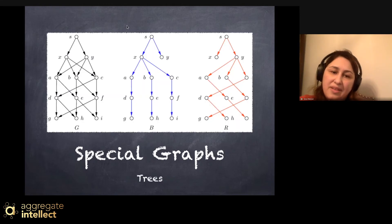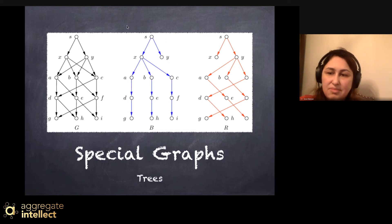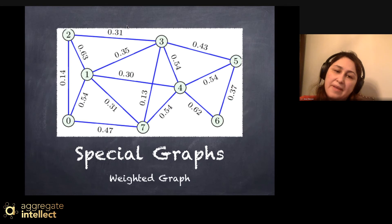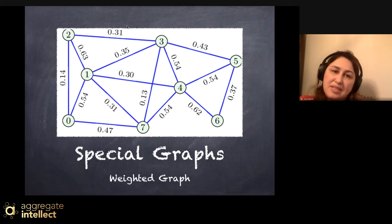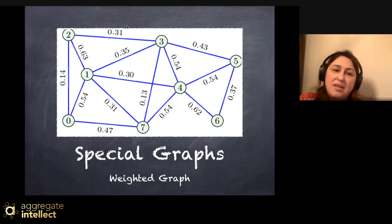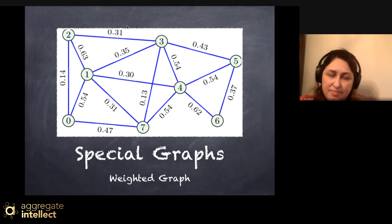Another famous category is trees — one of the most well-known special graph types. Also important are weighted graphs, where you can weight the connection between each of the nodes. Especially in machine learning, these weights can act very importantly in your models to see how strongly connections are made.